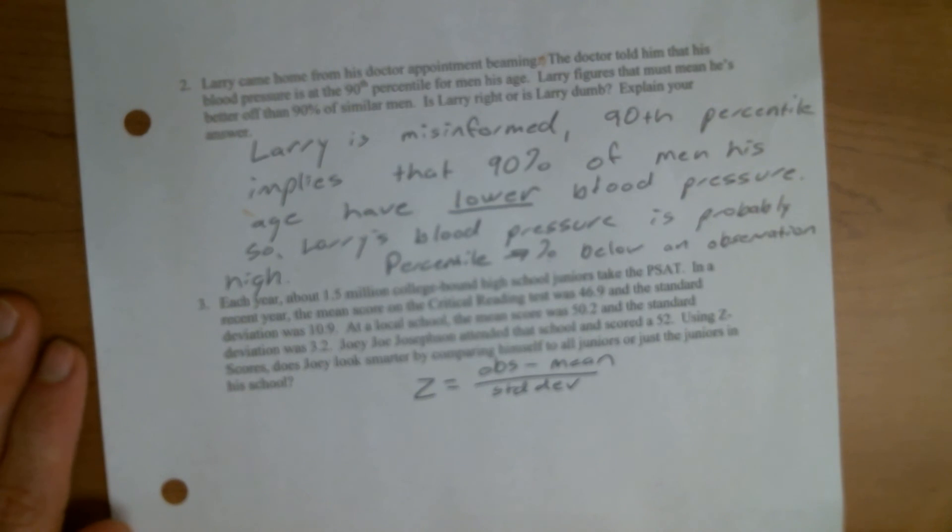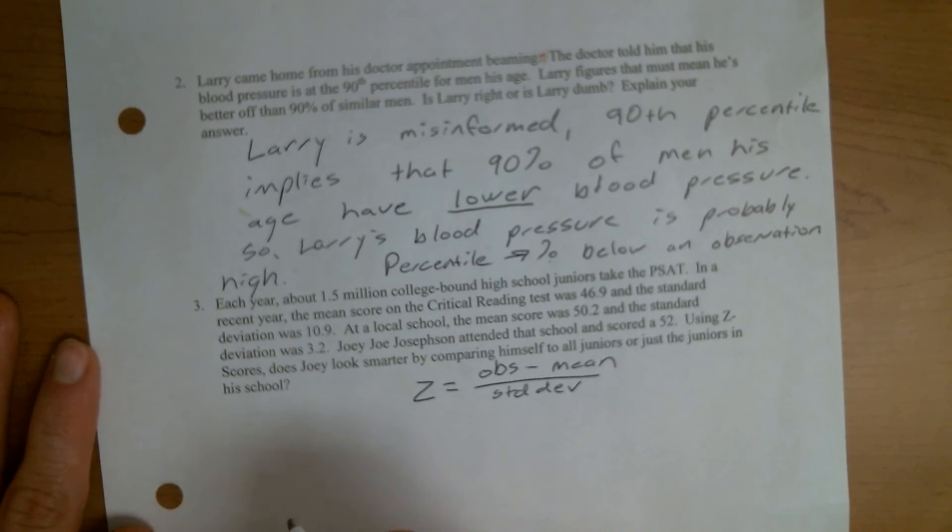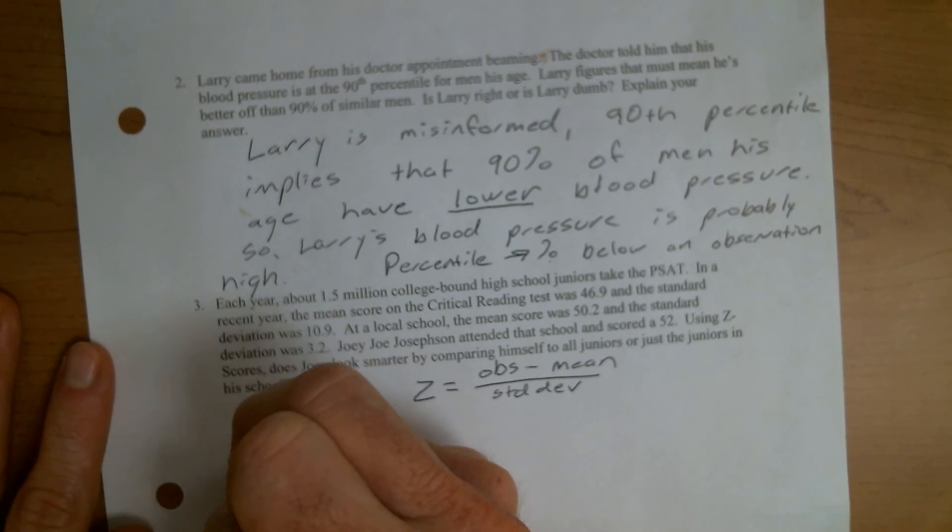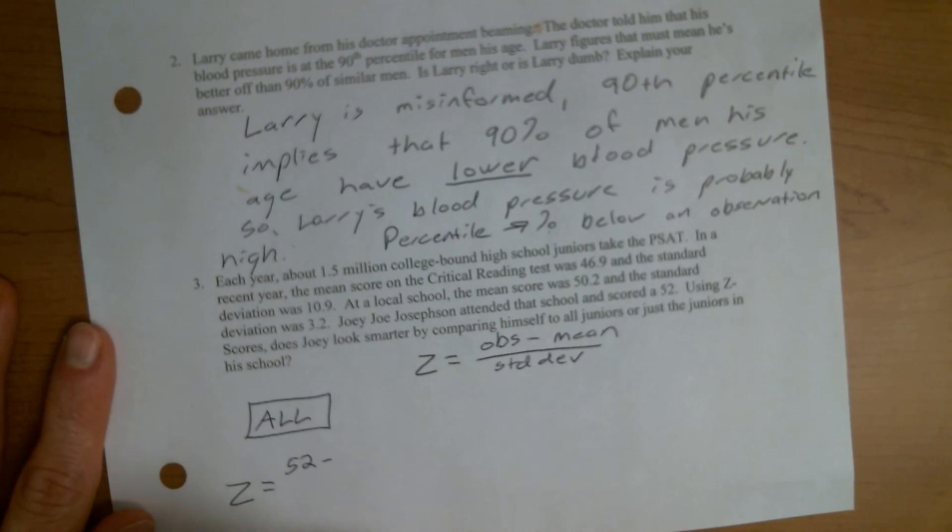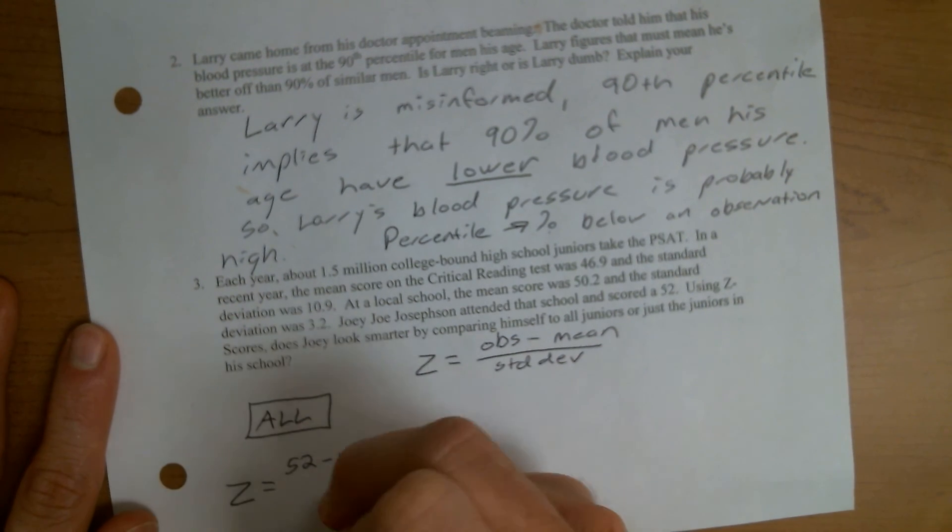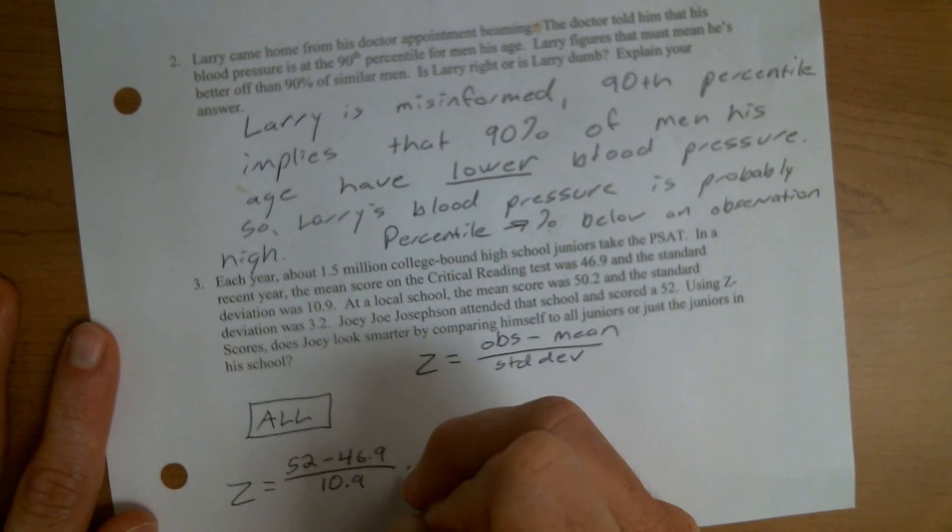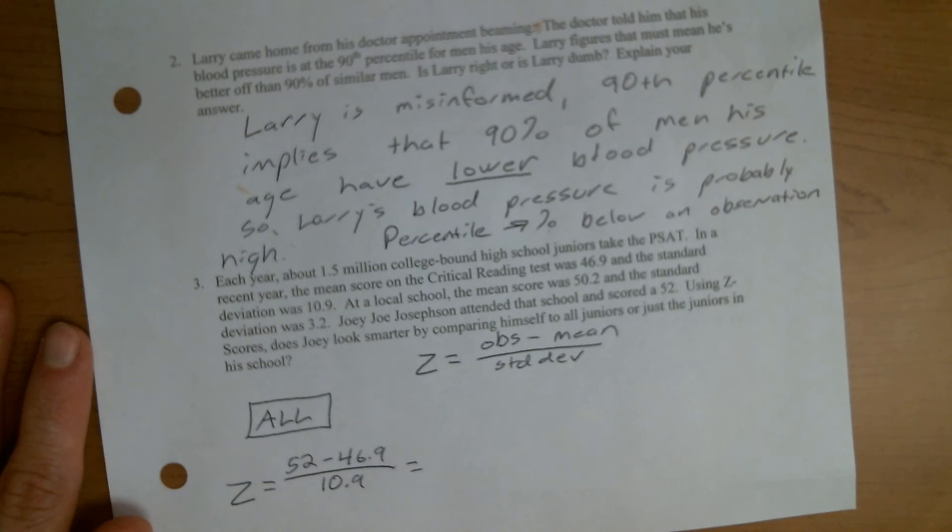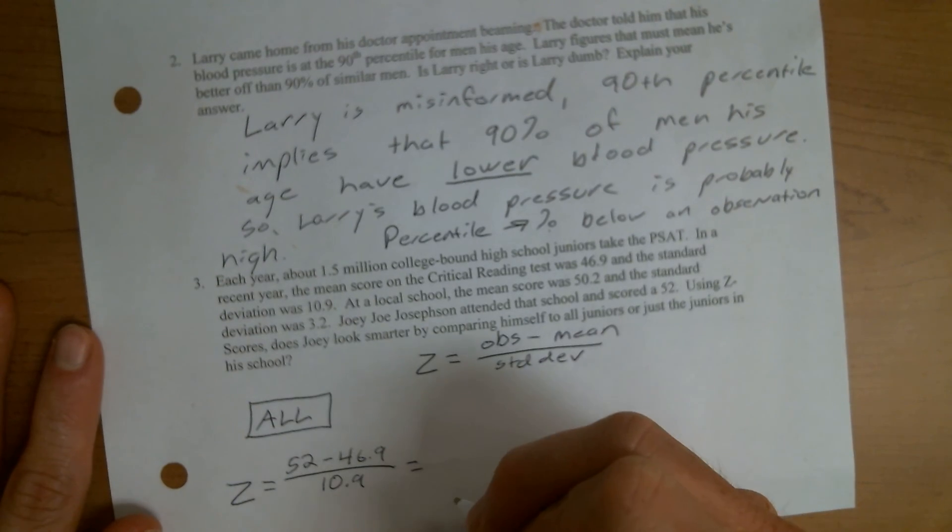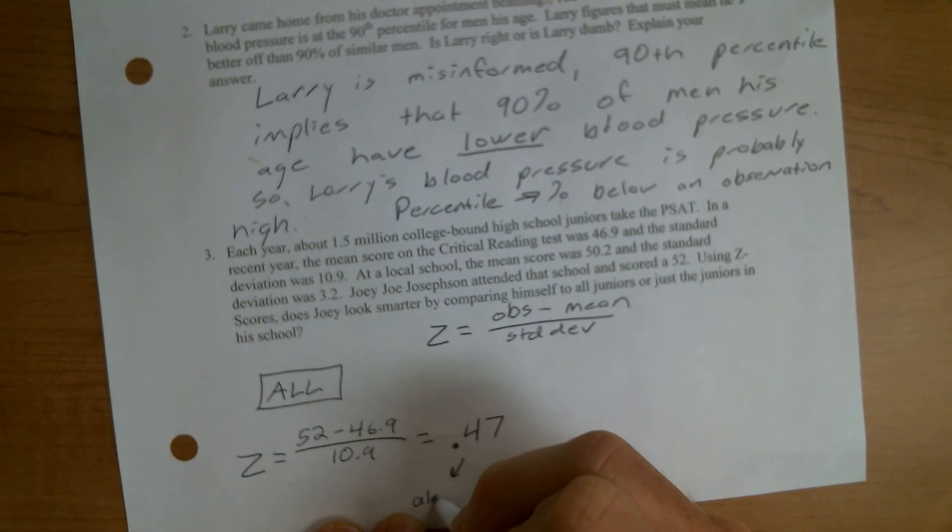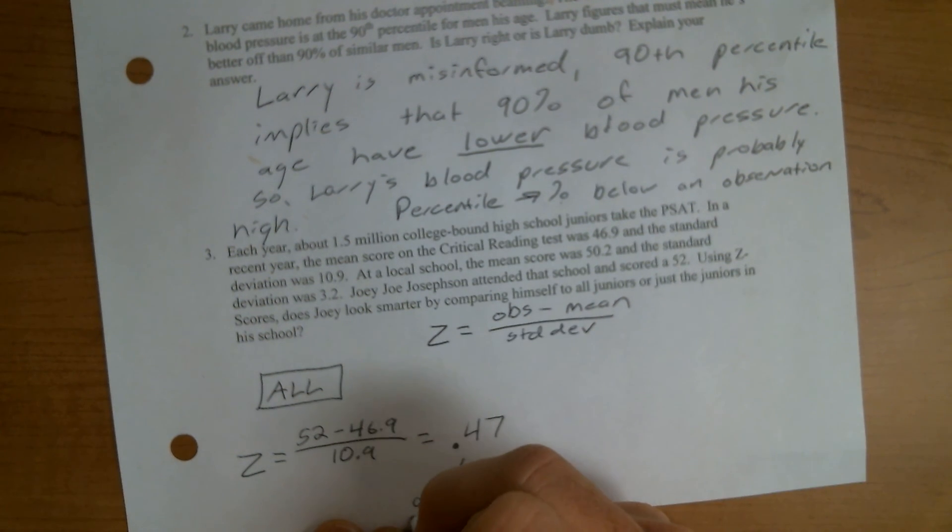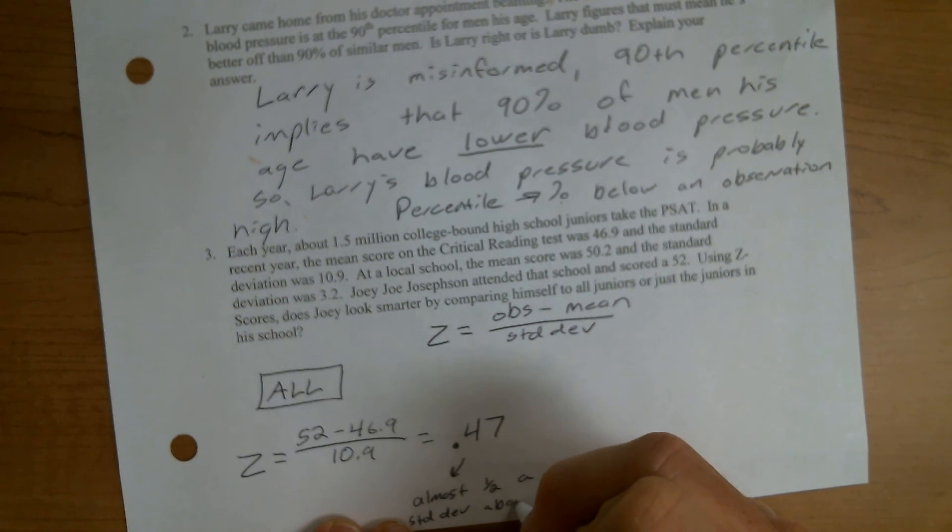So the observation would be Joey's score. So again, we have, I'm going to put all here for this is all juniors. So in the all junior calculation, Z equals the 52 that Joey scored minus the national mean of 46.9 divided by the national standard deviation of 10.9, which when we work that out, 52 minus 46.9 divided by 10.9, gives us like 4.678, but I'm just going to round that to 0.47. So that's basically almost half a standard deviation above the mean.